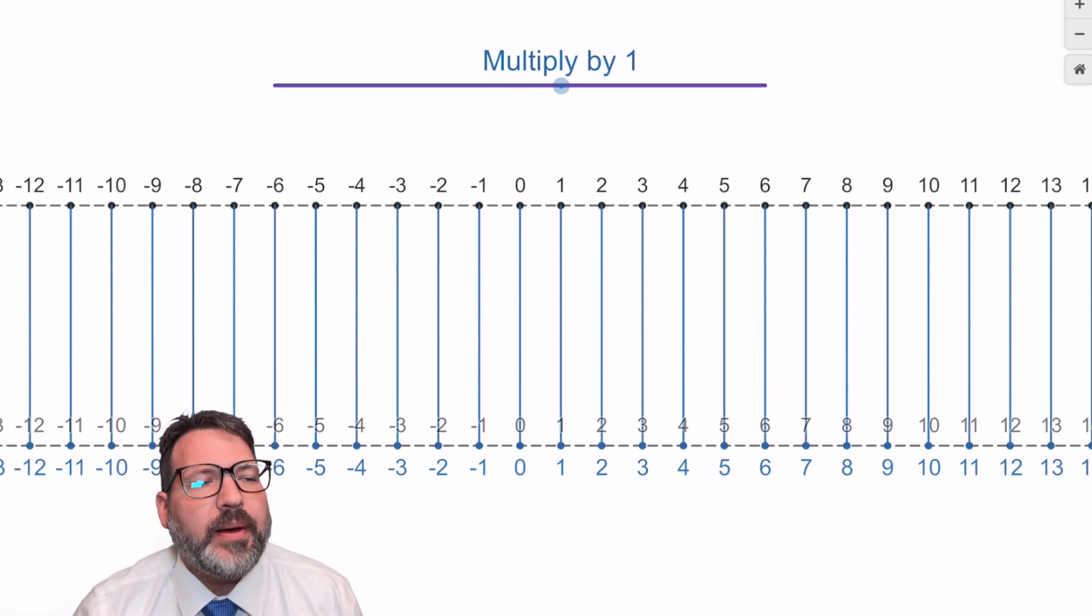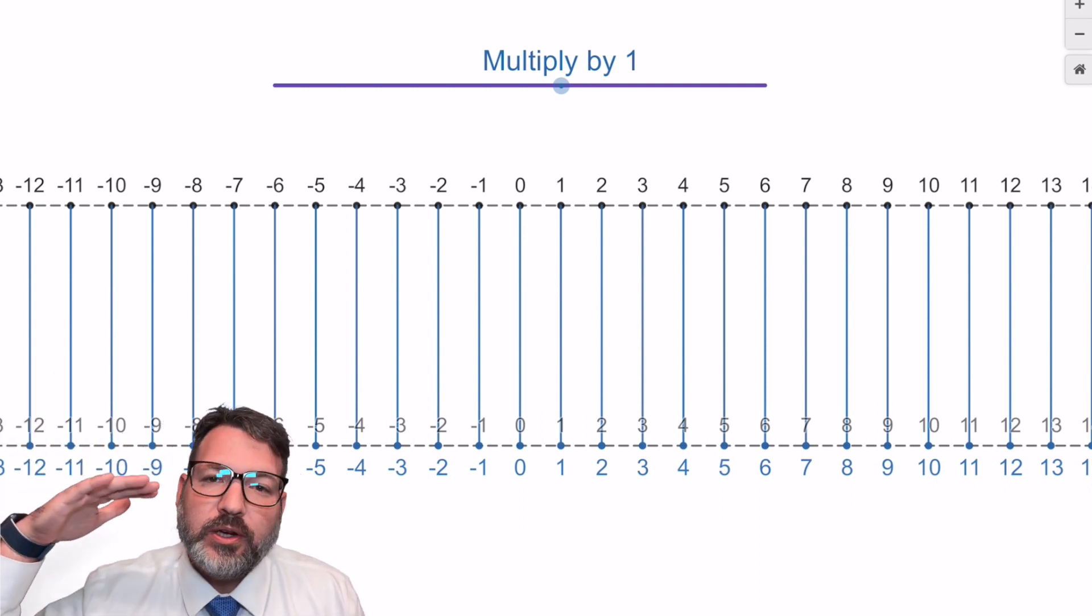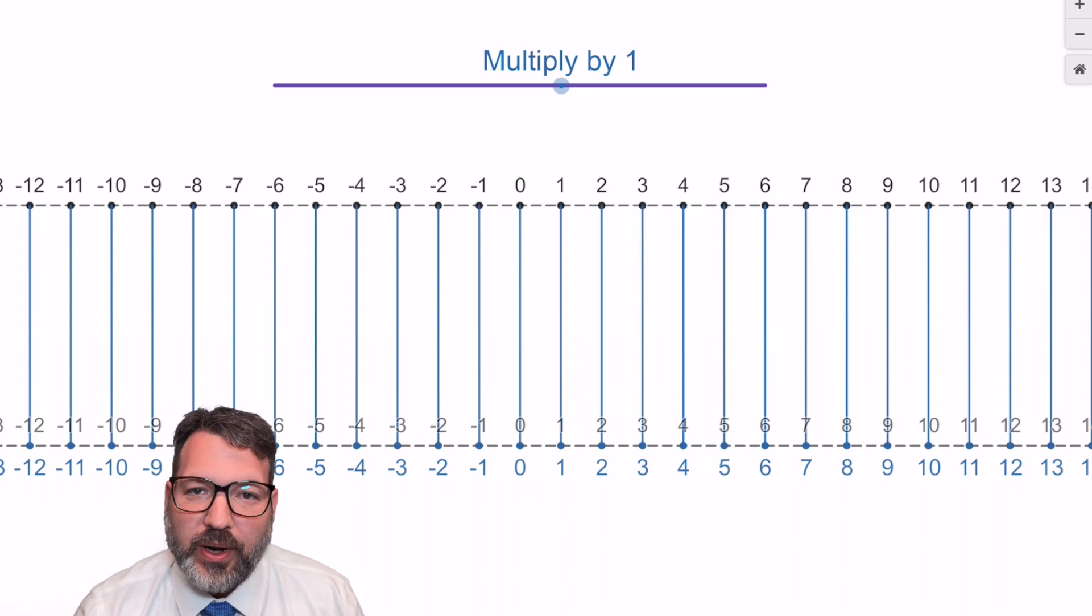If we understand though that multiplication represents scaling, I think we can get a sense of just why it is that multiplying a negative number times a negative number should actually return a positive number. So I want you to imagine, take a look at this lower number line here. This lower number line represents the result of multiplication. Right now, I've got a scale factor of 1. So of course, everything on the top number line corresponds directly to everything on the bottom number line.